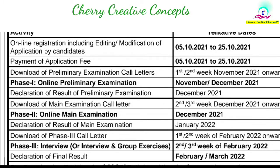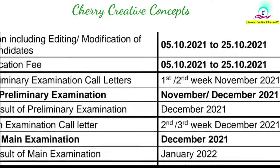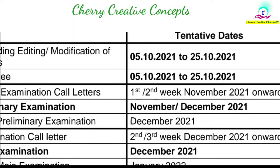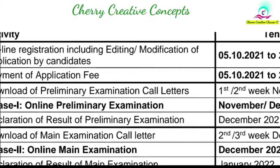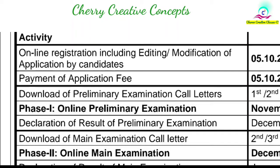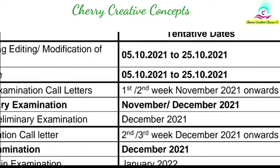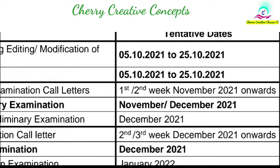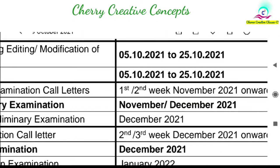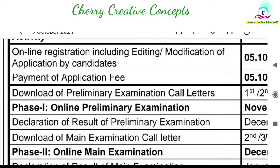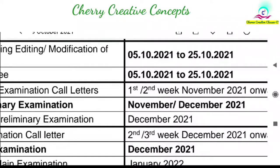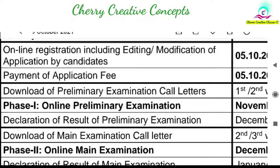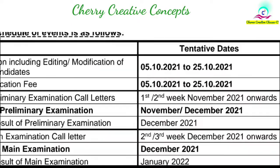The online application window will be October 5th to 25th. Once you apply, call letters will be issued in the 1st or 2nd week of next month. The exam is also going to be next month, in November, with preliminary exam results coming the following month — December.